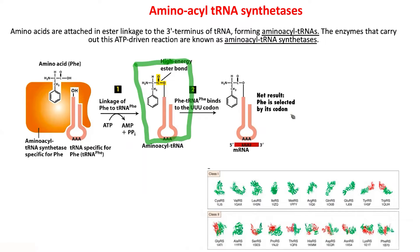Once the amino acid and tRNA are hooked up, the tRNA moves to the ribosome. On the mRNA, with the help of the ribosome, it looks for the codon. On one side of the tRNA is the anticodon, and once codon-anticodon compatibility is met, the amino acid is then presented to the ribosome for ligation to the next amino acid.